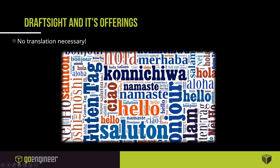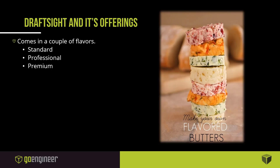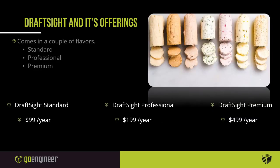DraftSight comes in a couple of different flavors. There is a Standard, a Professional, and a Premium version. In terms of pricing: DraftSight Standard runs about $99 a year, DraftSight Professional is about a hundred dollars more per year, and DraftSight Premium comes in at about $499 per year. With the yearly subscription you get support and any updates that come through.